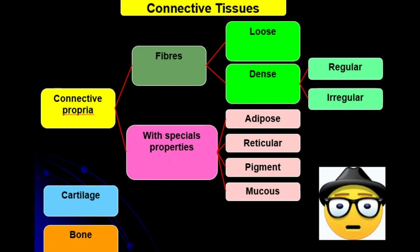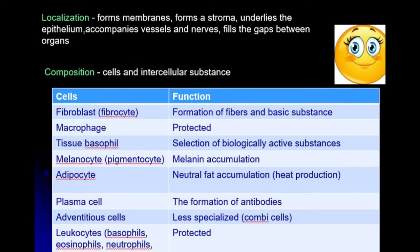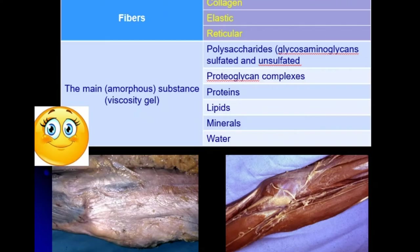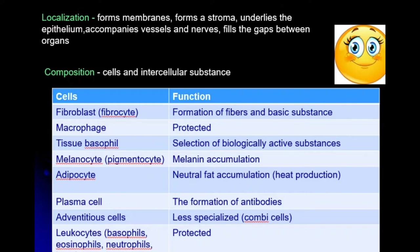Now let's discuss the types of cells which compose connective tissue. Here you can see a table of cell types and their functions. The main cells of connective tissue are fibroblasts. All types of cells can be classified as free cells and fixed cells. Fixed cells are the main aboriginal cells of the connective tissue.